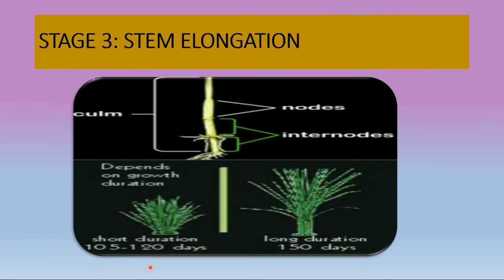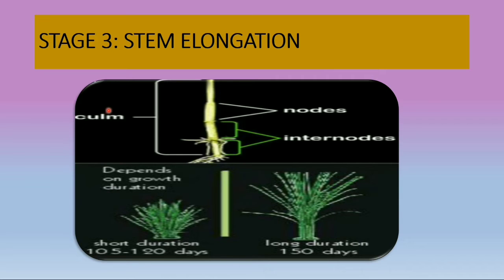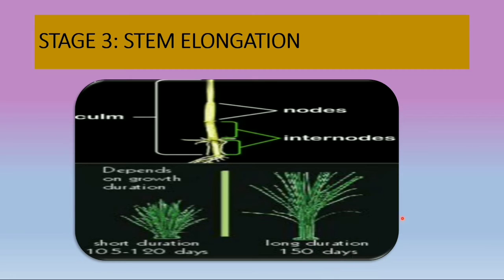Stage 3 is stem elongation. You can observe in the image that stem elongation begins before panicle initiation in late maturity. In short duration varieties, stem elongation and panicle initiation occur simultaneously. The elongation of the stem depends on the growth duration: short duration is 105 to 120 days, and long duration is 150 days.